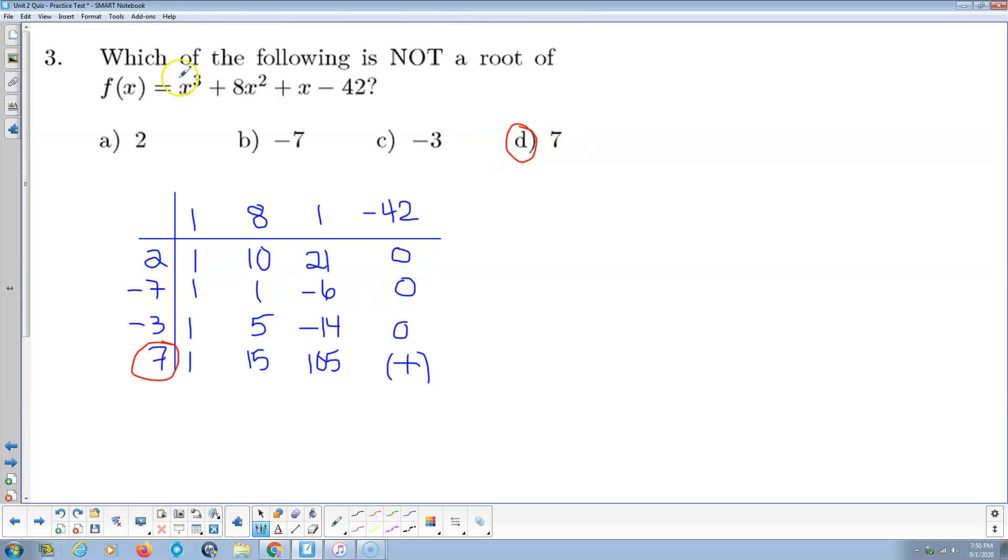Same kind of question. Same process. Coefficients here. 1, 8, 1, and negative 42. And my divisors are 2, negative 7, negative 3, 7 here. Notice I put 2 in, I get 0. 2 is the root. Same question. What's not a root?